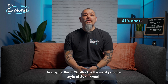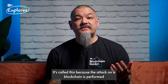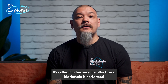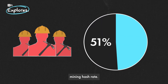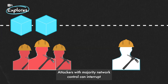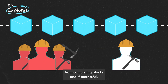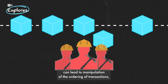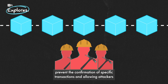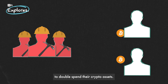In crypto, the 51% attack is the most popular style of Sybil attack. It's called this because the attack on a blockchain is performed by a group of miners who control more than 50% of the network's mining hash rate. Attackers with majority network control can interrupt the recording of new blocks by preventing other miners from completing blocks, and if successful, can lead to manipulation of the ordering of transactions, prevent the confirmation of specific transactions, and allow attackers to double-spend their crypto assets.